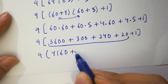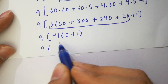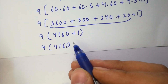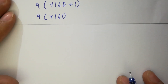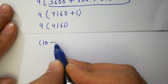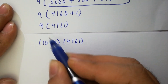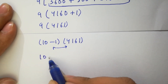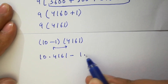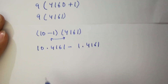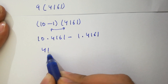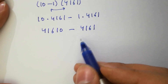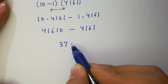Here we have 9 times (4160 plus 1 is 4161). In the next step, this is the same as (10 minus 1) times 4161. We can multiply: 10 times 4161 minus 1 times 4161, which gives 41610 minus 4161, which equals 37449. So we have solved all of this without a calculator.